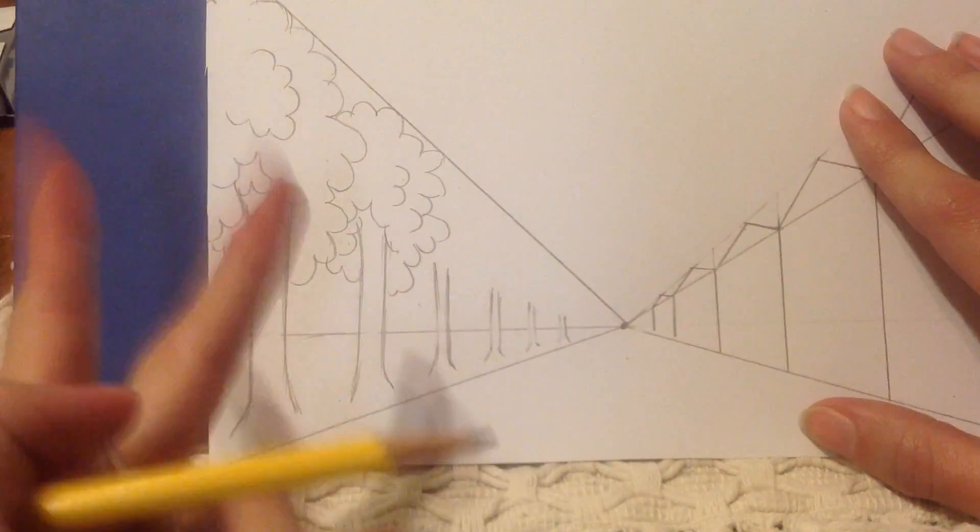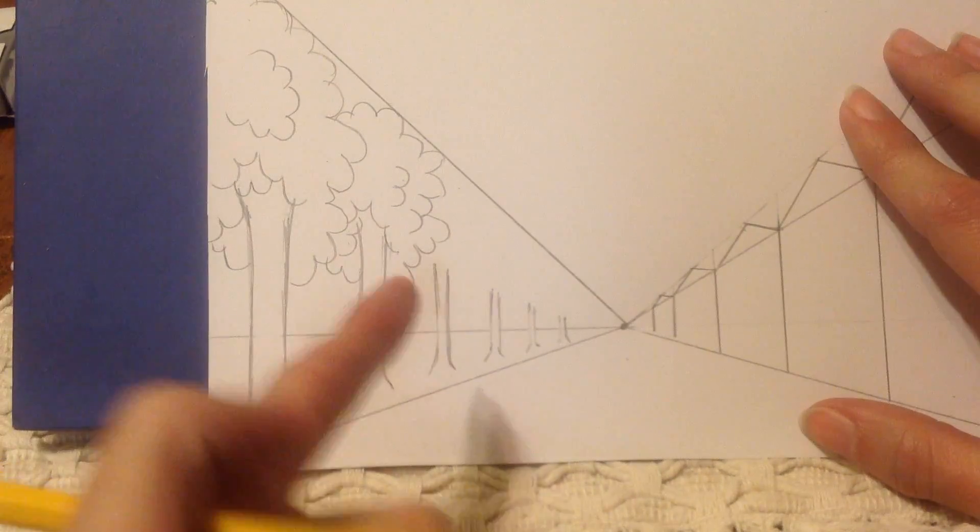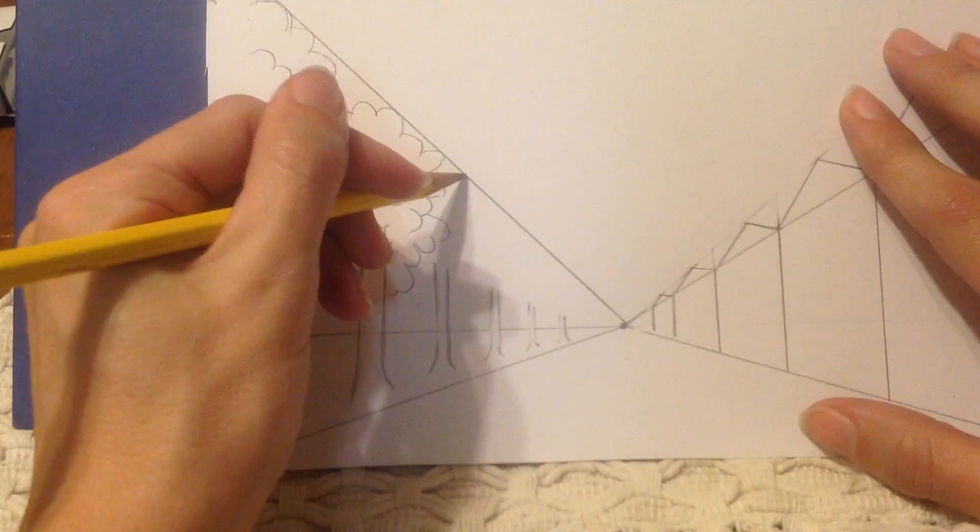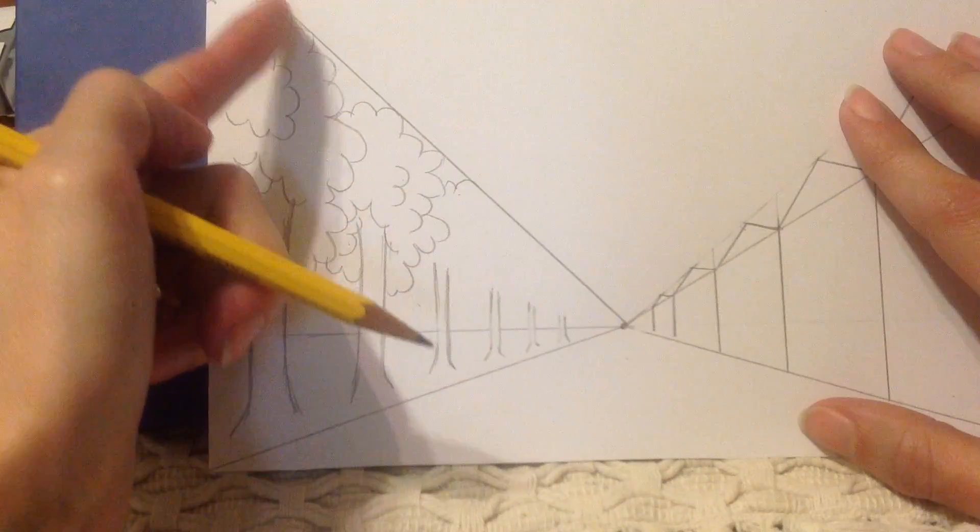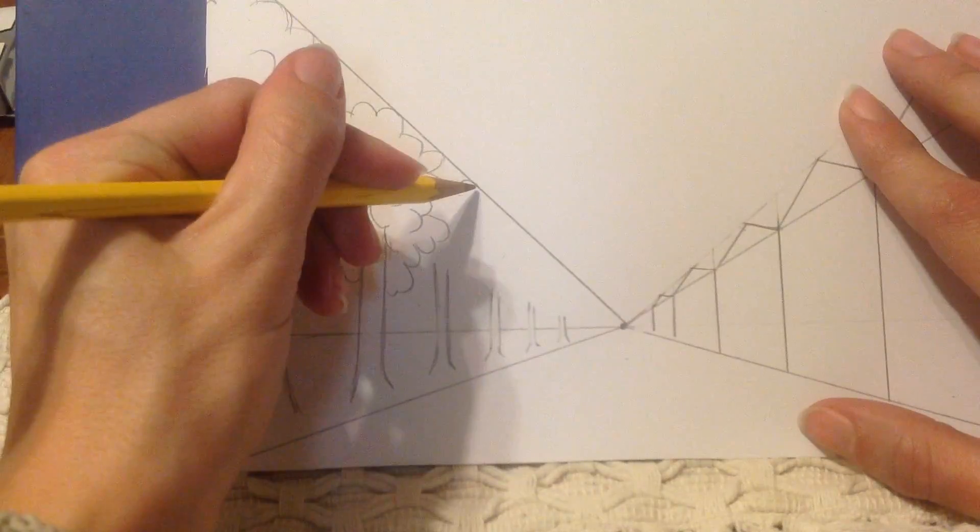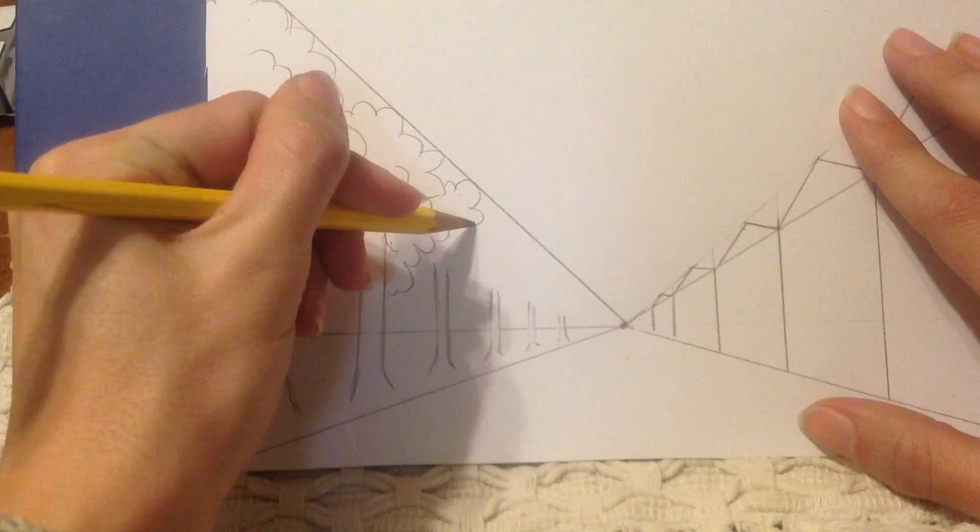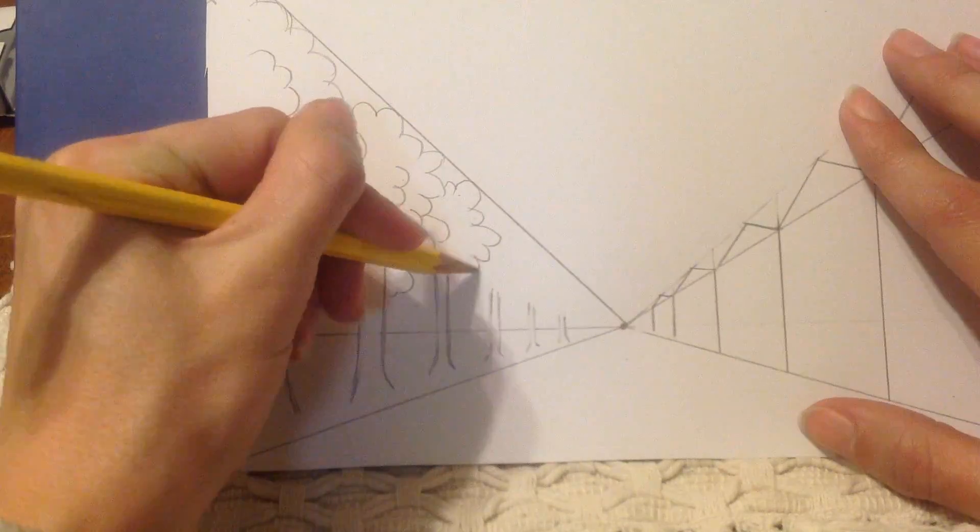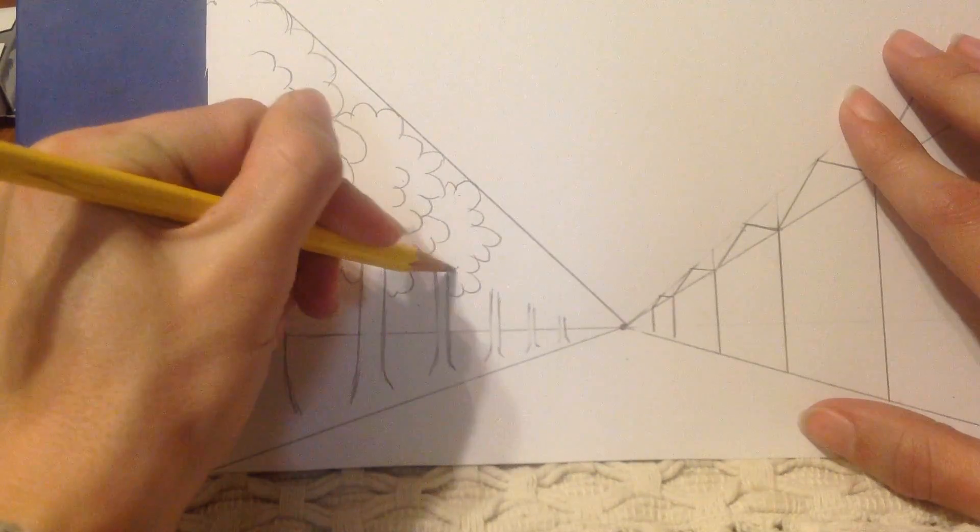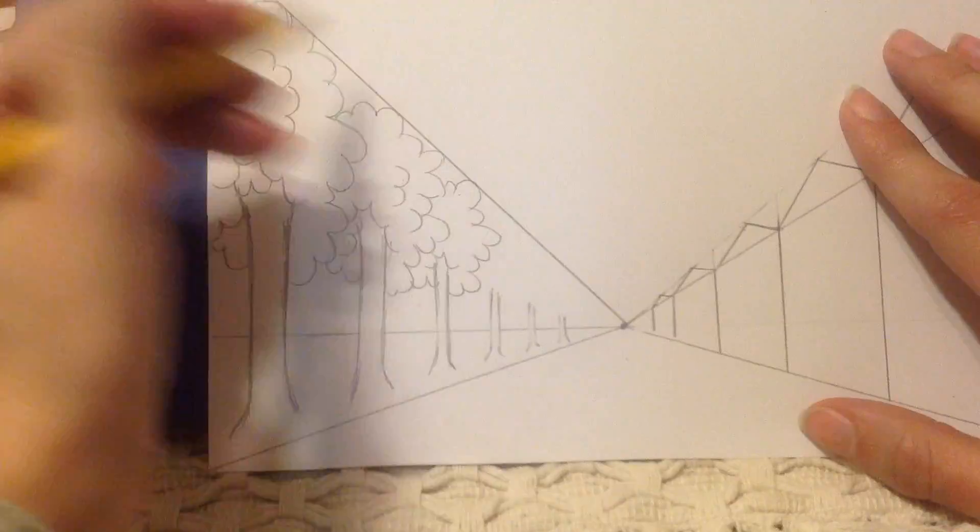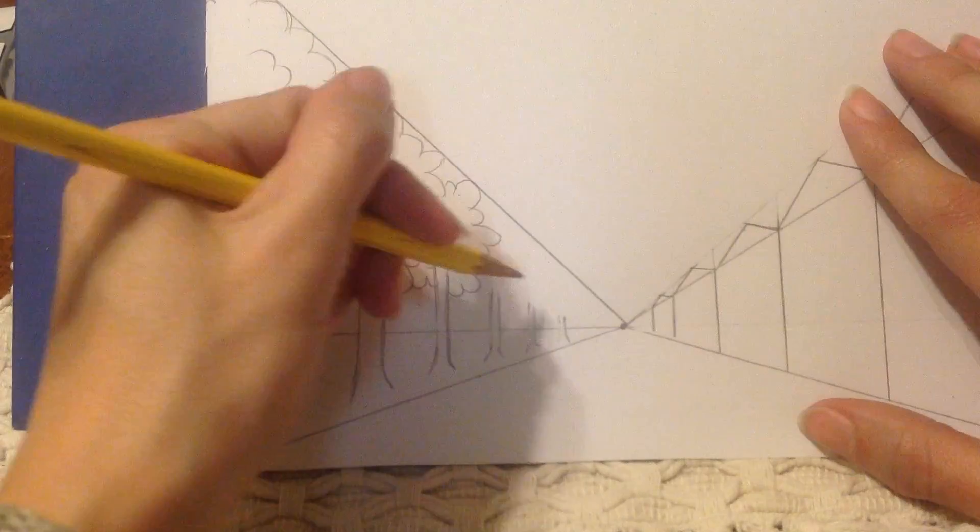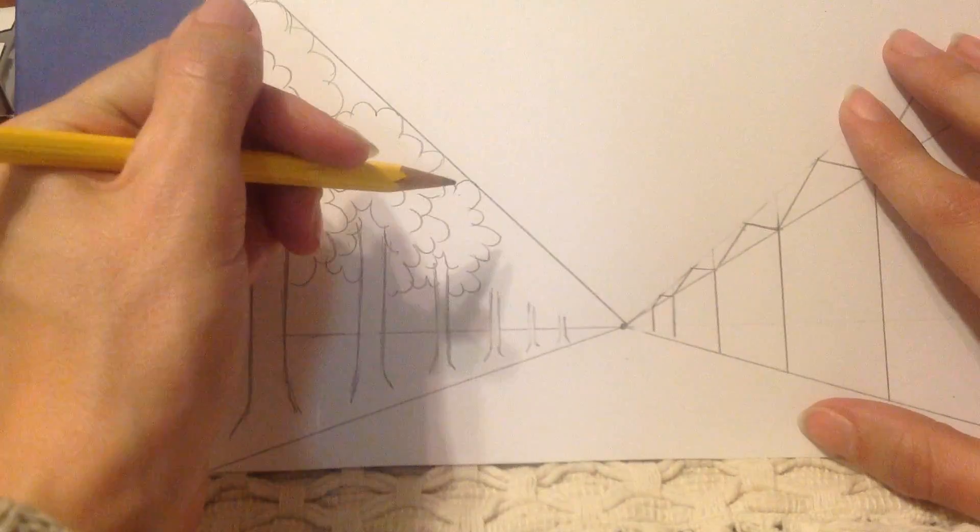But I want to start by making sure that I touch this line at the top. I've got two trees. Now for the next one, touch the top with my leaves. See how it's getting smaller and smaller as we're going back? Now I'll keep going until I've reached this one here.